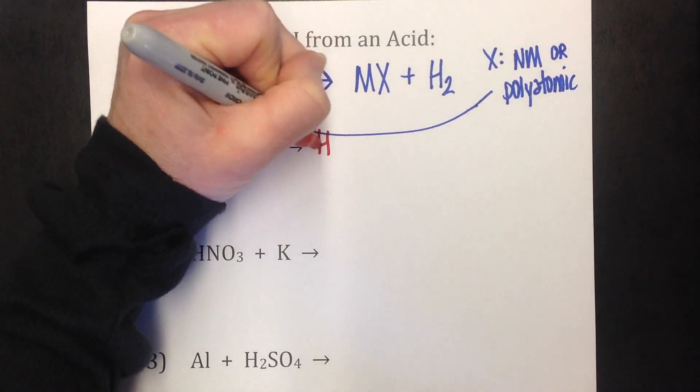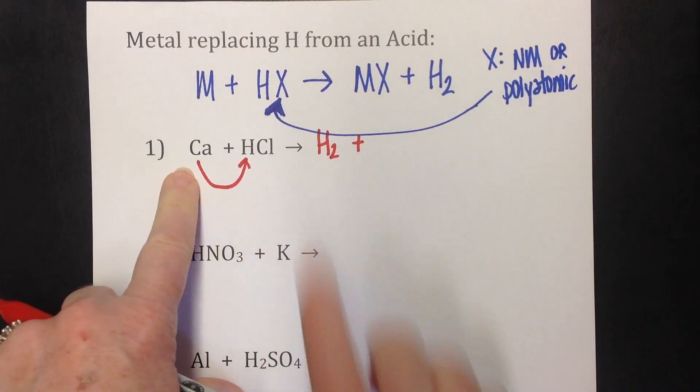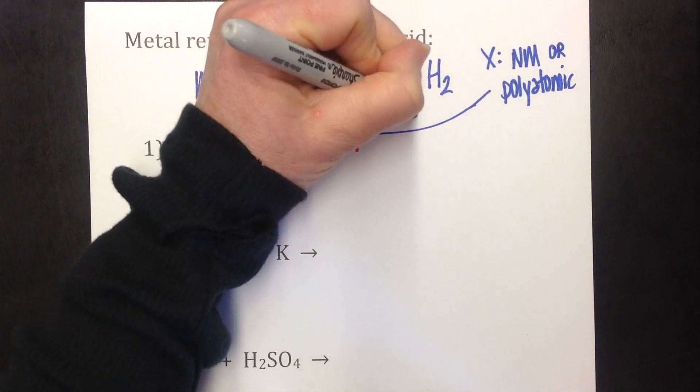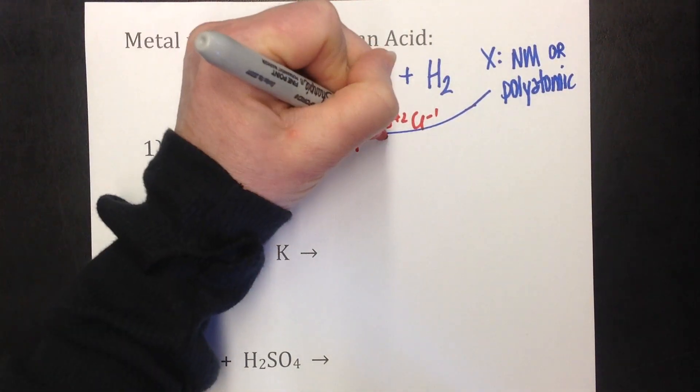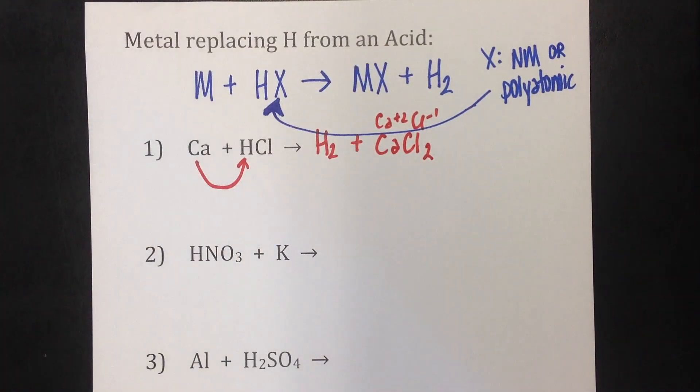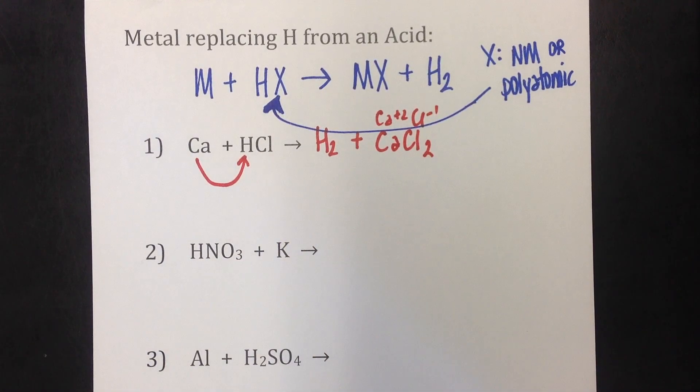And what that means is this calcium can kick this hydrogen out. So hydrogen just got booted to the curb. And now we're going to put together calcium and chloride. Remember, calcium is a plus two. Chloride is a minus one. So that gives you CaCl2. So when this happens, you're going to get hydrogen gas and then some sort of ionic compound, or you could say salt.